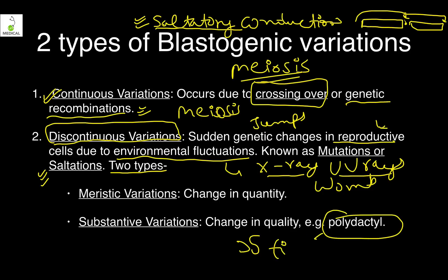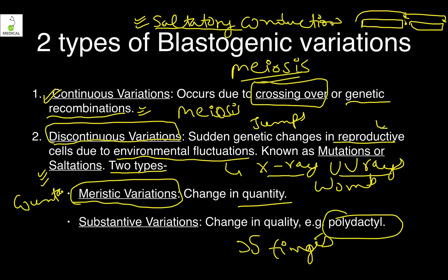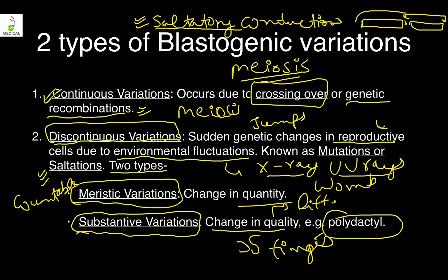There are two types of discontinuous variation. Polydactyly — having more than five fingers — is a meristic variation, meaning it is countable, a change in quantity. However, it is also a substantive variation because differentiation and function become different. Meristic means change in quantity while substantive means change in quality, and polydactyly is both.